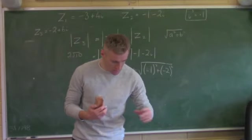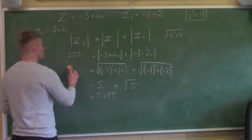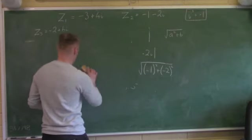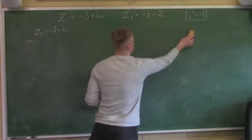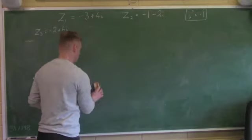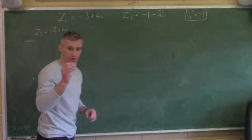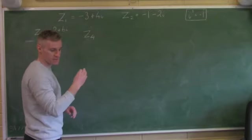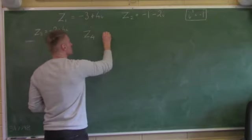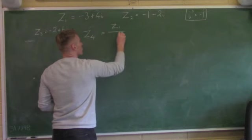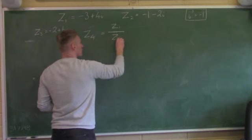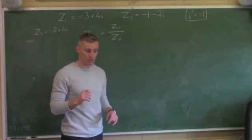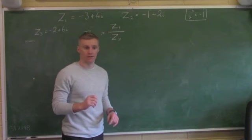The last part of this question: find Z4. The question tells us Z4 is equal to Z1 over Z2 — this is division. It's asked very regularly, nearly every year this appears as part C of the question. They want it written in the form of x plus yi.